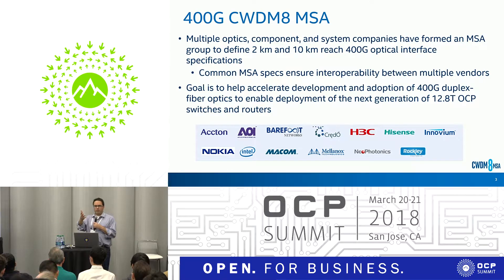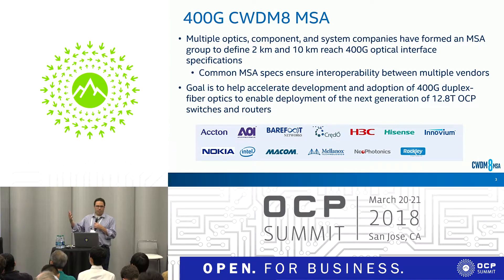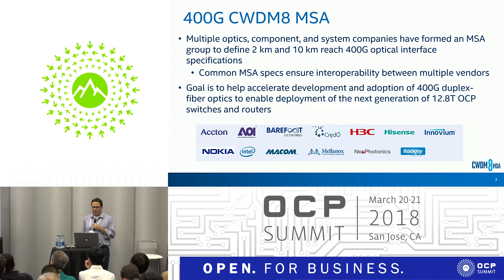The overall goal is to help accelerate adoption of 400 gig networking equipment. Just as an example, Edgecore announced a 400 gig switch at the OCP show. But this applies to any type of 400 gig networking equipment, whether it's OCP networking equipment from many of the companies here or some proprietary 400 gig networking equipment.